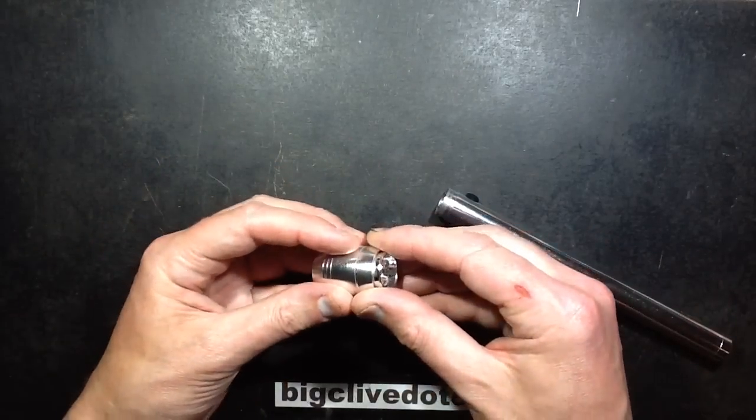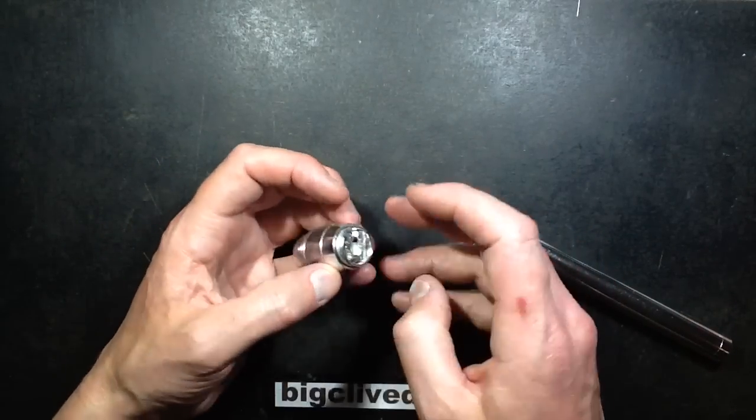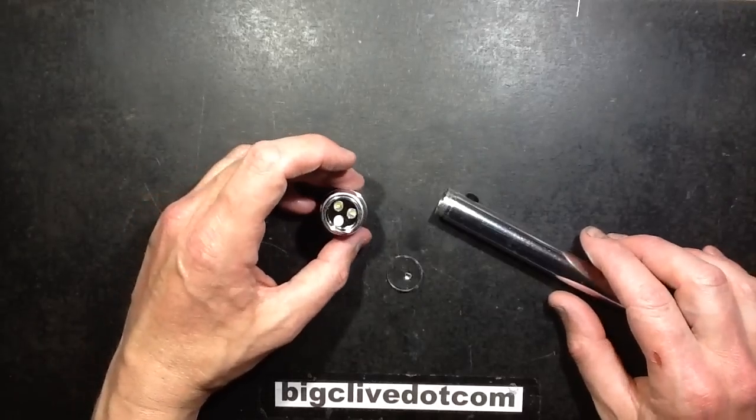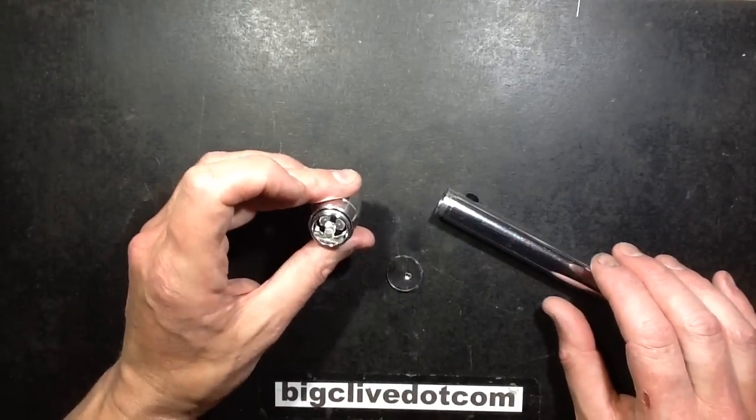It used to be you could unscrew the front of the barrel and take the lens and all the LED assembly out. It was quite easy to modify, put new LEDs in, but this is very different, this one. I think it's the first of this type I've seen.